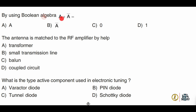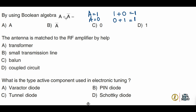Next: by using Boolean algebra, A + A' equals what? Consider A = 1: the expression becomes 1 + 1' = 1 + 0 = 1. Consider A = 0: the expression becomes 0 + 0' = 0 + 1 = 1. In both cases the answer is 1, so we can conclude A + A' always equals 1. Option D is correct.